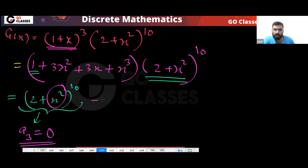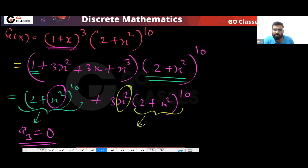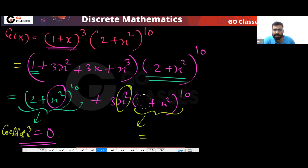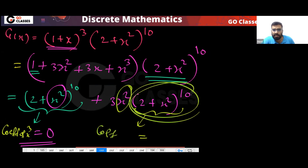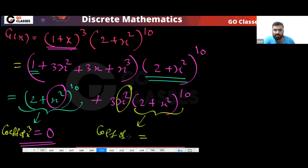The coefficient of x³ from the 3x² term: we already have x² outside, so from (2+x²)¹⁰ we need the coefficient of x¹. But in (2+x²)¹⁰ we can only get even powers of x, so we cannot get x¹. That contribution is also 0.